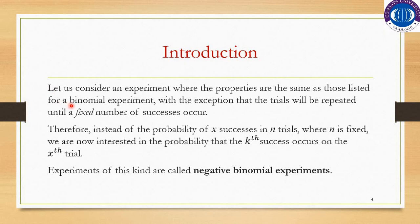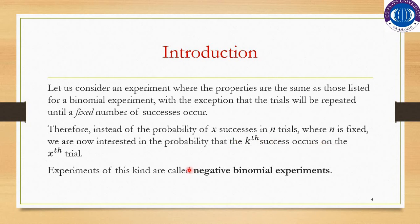The difference is that in a negative binomial experiment, the trials will be repeated until a fixed number of successes occur. This means the number of trials will not be fixed. Therefore, instead of the probability of x successes in n trials where n is fixed as in the binomial distribution, we are now interested in the probability that the kth success occurs on the xth trial.